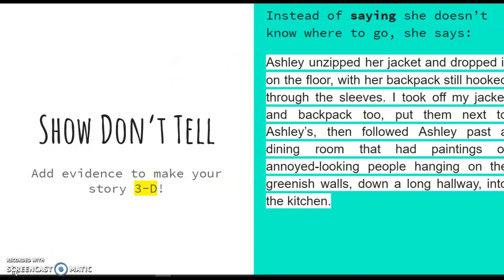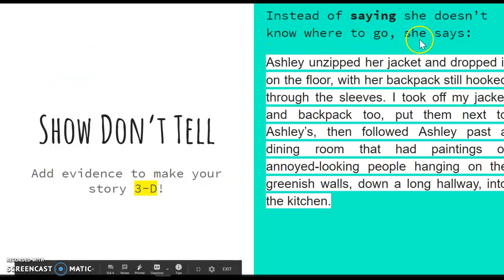Continuing on with Rachel's description of Ashley's house as a mansion. Instead of saying she doesn't know where to go, she says, Ashley unzipped her jacket and dropped it on the floor with her backpack still hooked through the sleeves. I took off my jacket and backpack too, put them next to Ashley's, then followed Ashley past a dining room that had paintings of annoyed looking people hanging on the greenish walls down a long hallway into the kitchen. Now, Rachel simply could have said, I don't really know where to go, so I just followed Ashley. But instead of telling us what she did, she showed us what she did by providing details that would have happened in that scene.